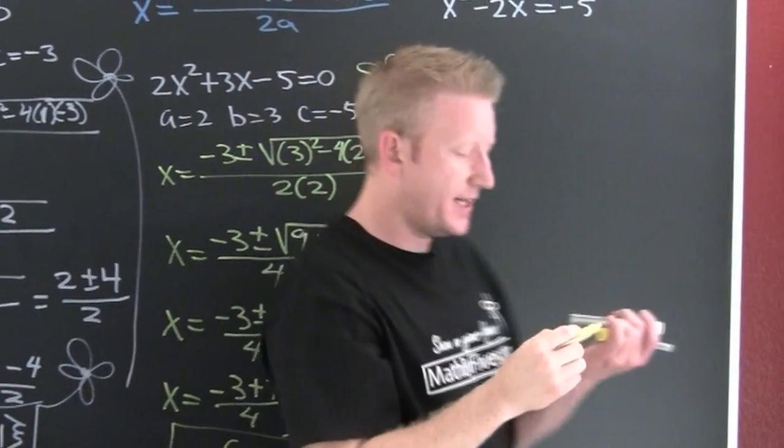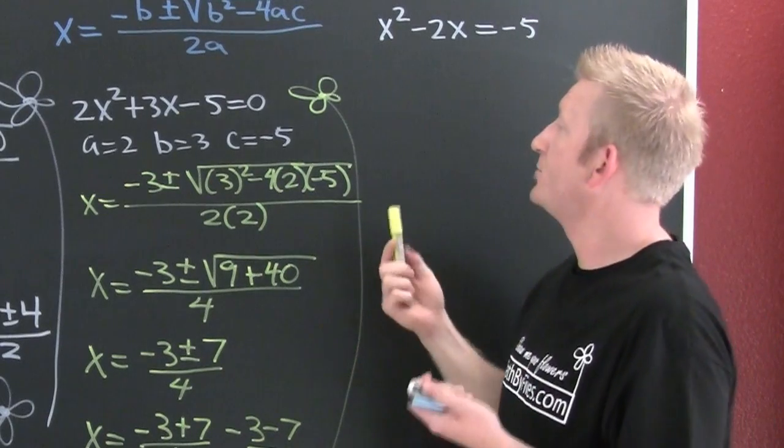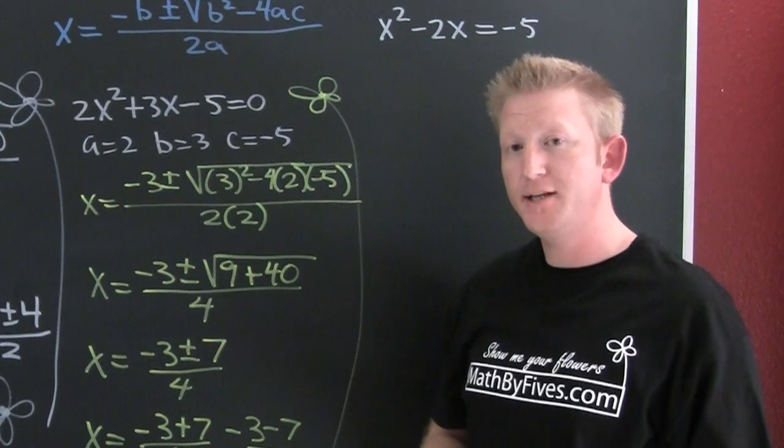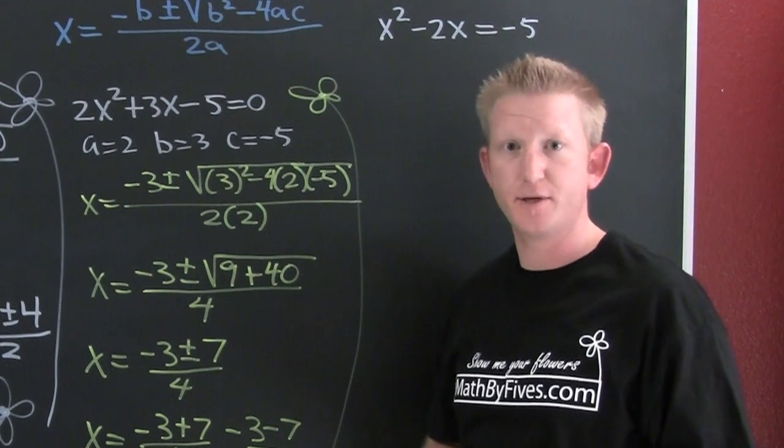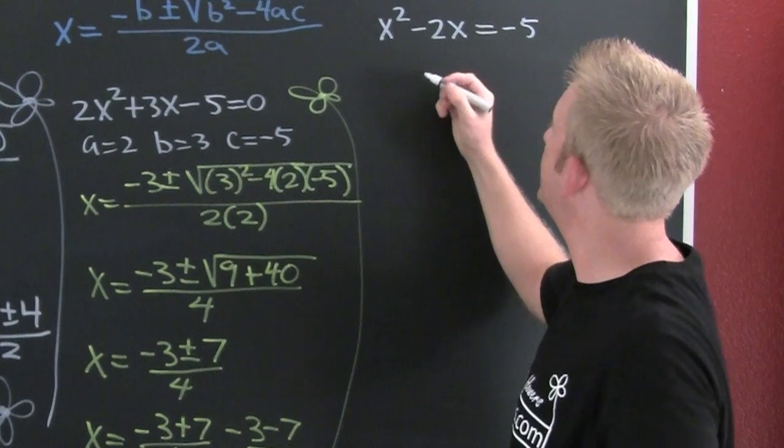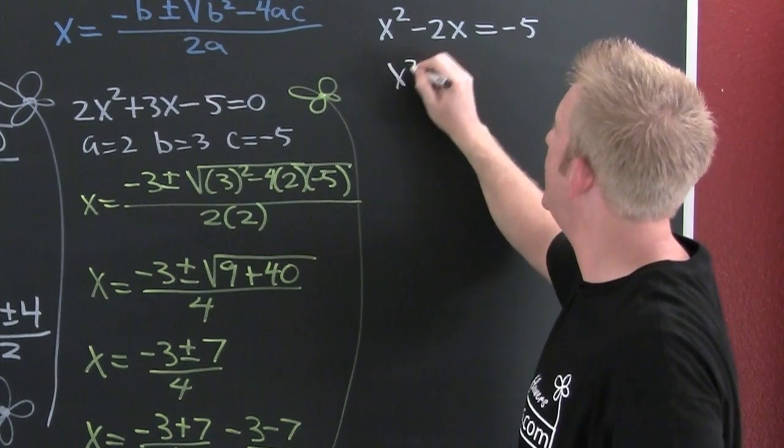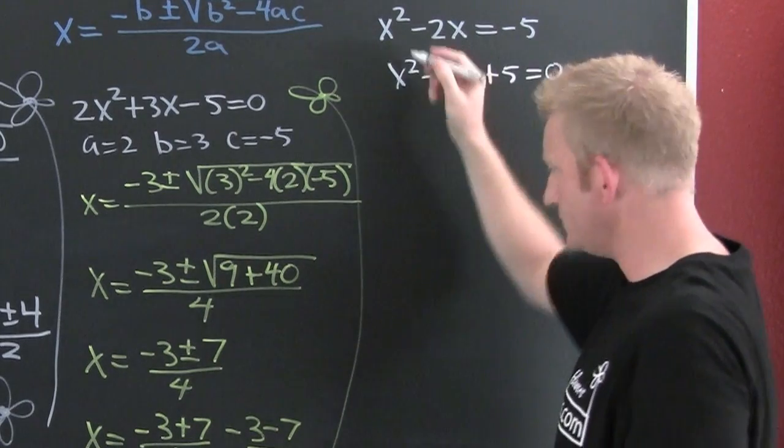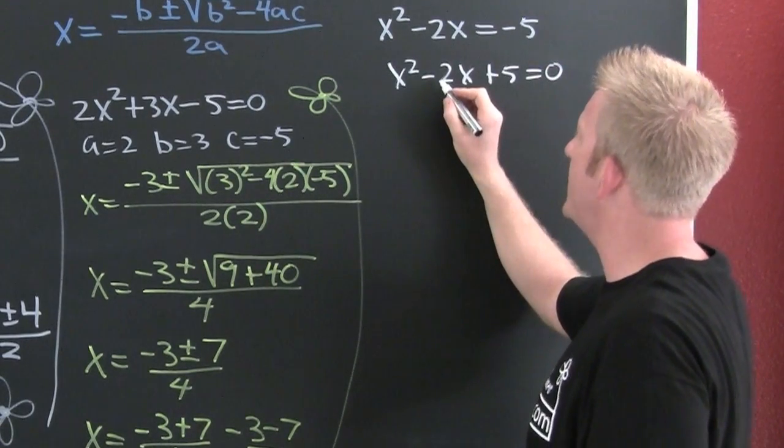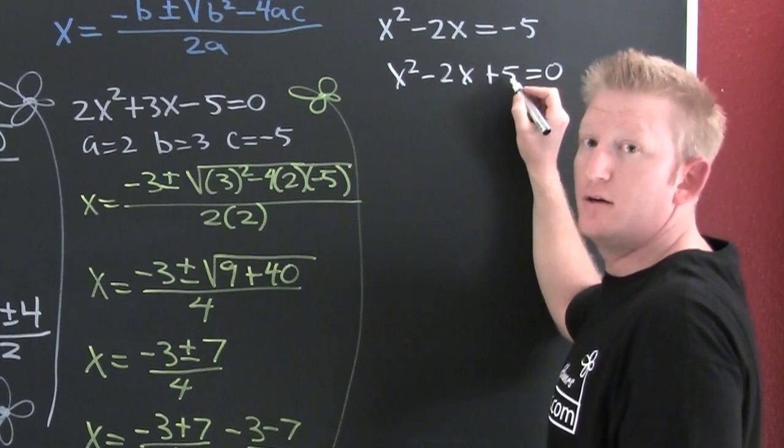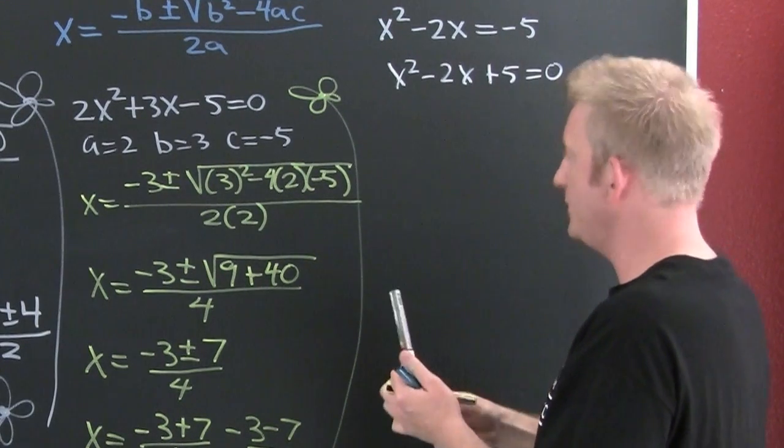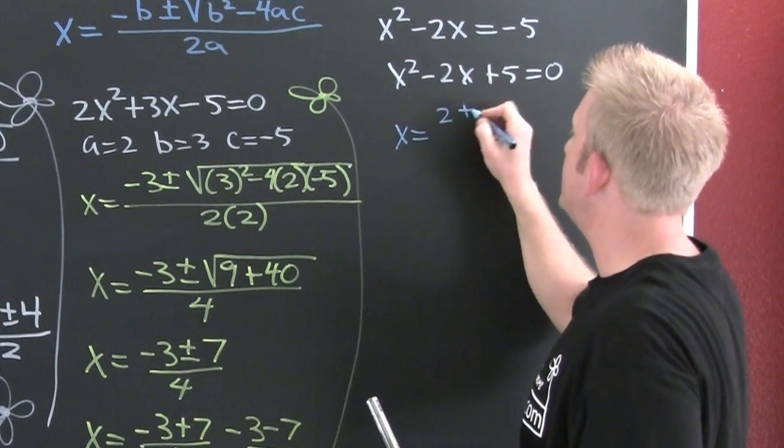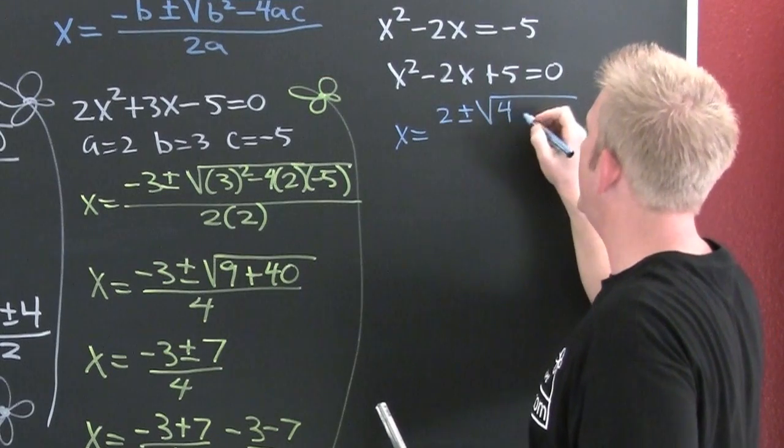This next example: in order to use the quadratic formula you need to put it in standard form, meaning ax squared plus bx plus c equals zero. So I got to set this equal to zero. This is going to be x squared minus 2x plus 5 equals zero. Here my a is 1, my b is minus 2, and my c is positive 5.